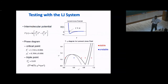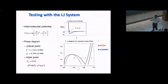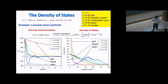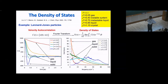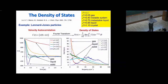Let's see how this method works for a model system — a cell energy system — for which very high quality equation of state data exists. If you compute the velocity autocorrelation function and take the Fourier transform to get the density of states, it looks different for gas, liquid, and solid phases. Comparing to the Debye model for a solid, you see an omega-squared variation at low frequency — but this is not seen in a liquid or gas.